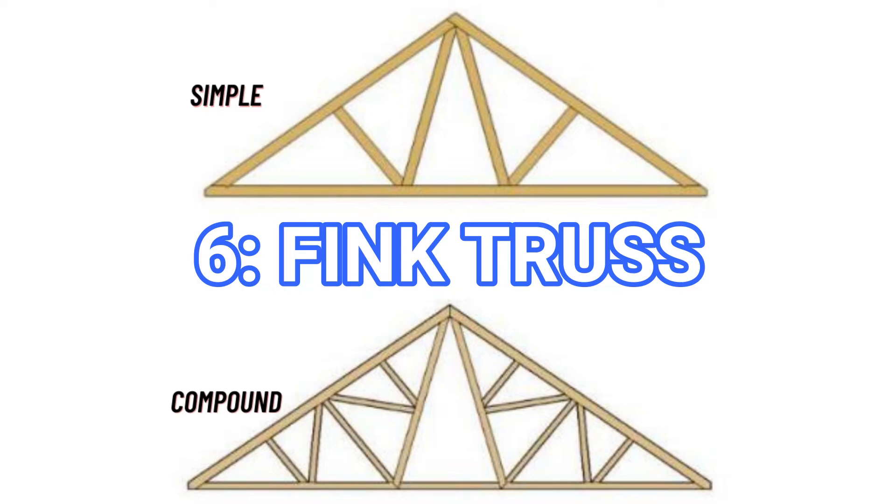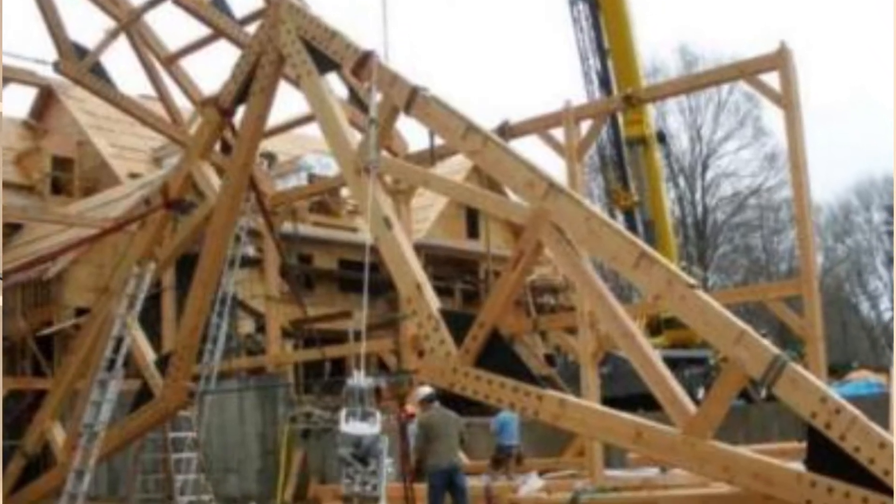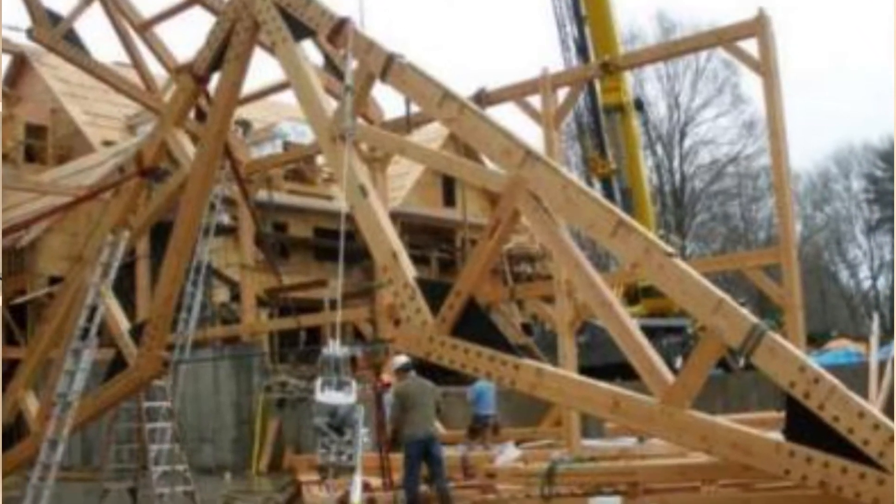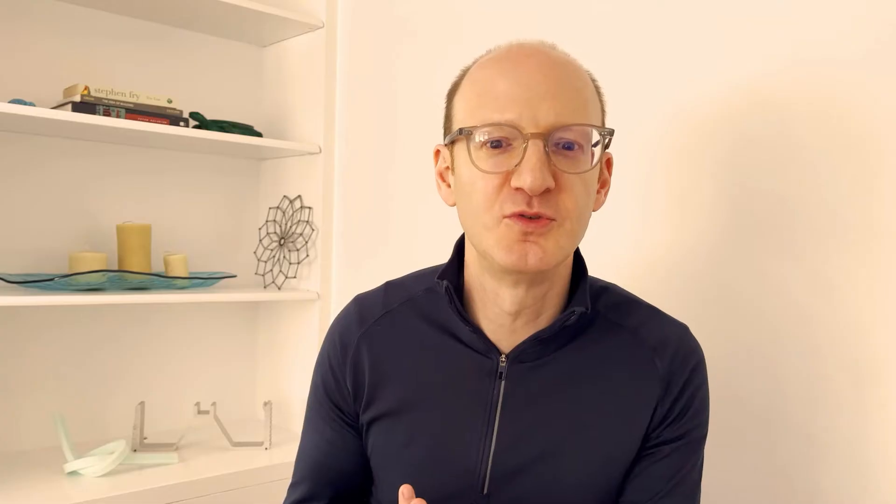The Fink truss. These are often used in gable roofs for homes. They align with the sloped roof that's usually used for helping shed water and snow, and it allows for structural depth. There's also a range of other options that relate to the Fink truss: the double Fink, the fan, and there's a lot of variety that carpenters have used that are called Fink trusses in some way.